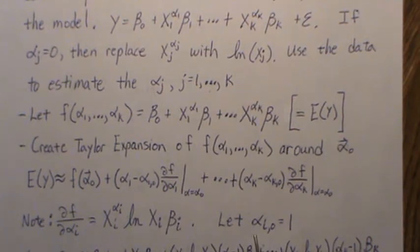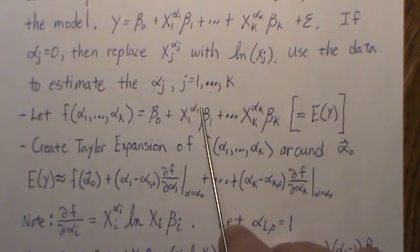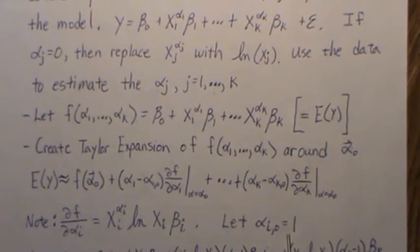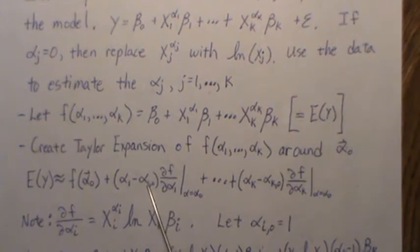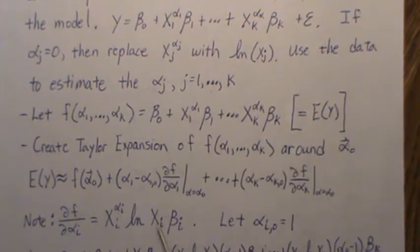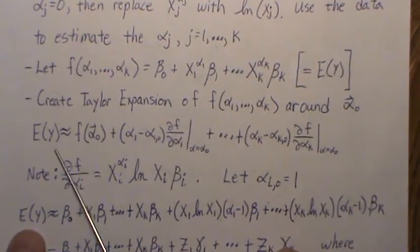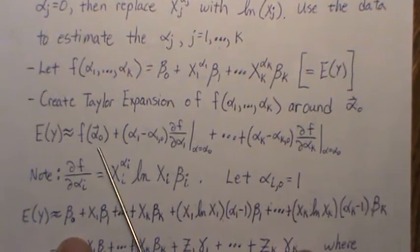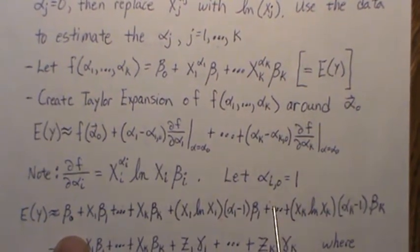Now this is an iterative process, so we have to pick a starting value. The starting value that we use is 1 - we're going to use 1 for each one of these exponents. So when we do the Taylor expansion, that's a 1, this is a 1, all these alphas are 1.